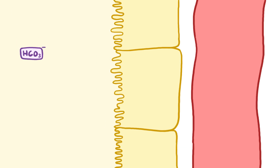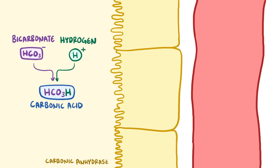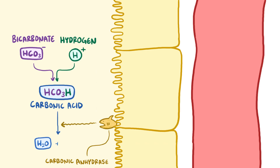When a molecule of bicarbonate approaches the apical surface of the brush border cell, it binds to hydrogen to form carbonic acid. At that point, an enzyme called carbonic anhydrase type 4, which lurks in the tubule among the microvilli, splits the carbonic acid into water and carbon dioxide.